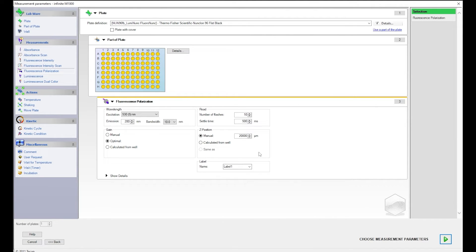From Actions, drag and drop Move Plate below fluorescence polarization. Under Move Plate, select Out.